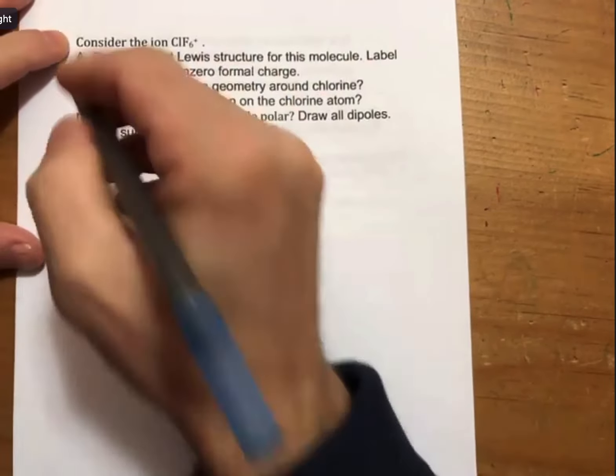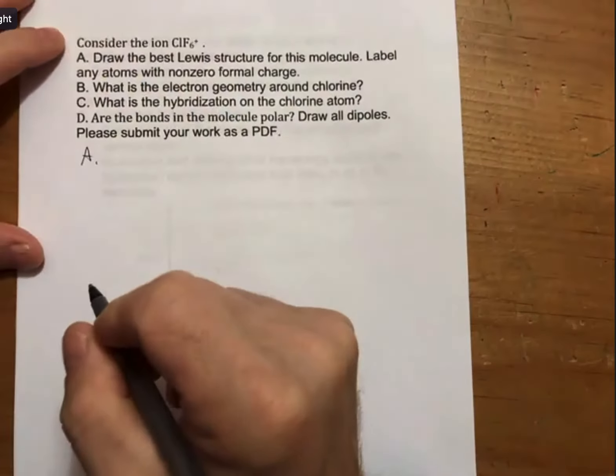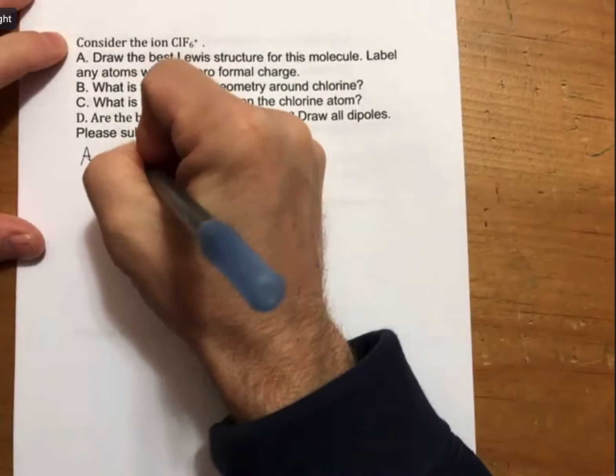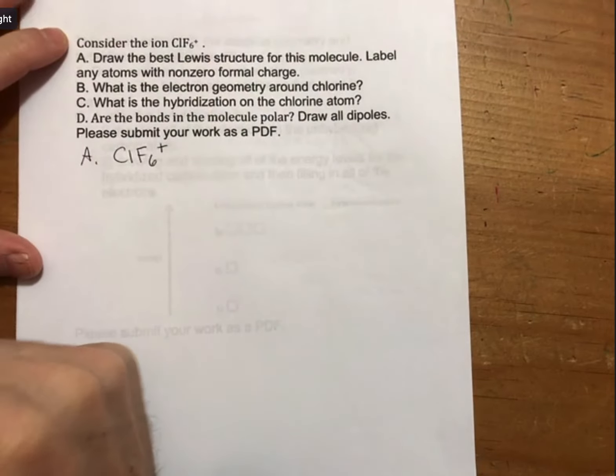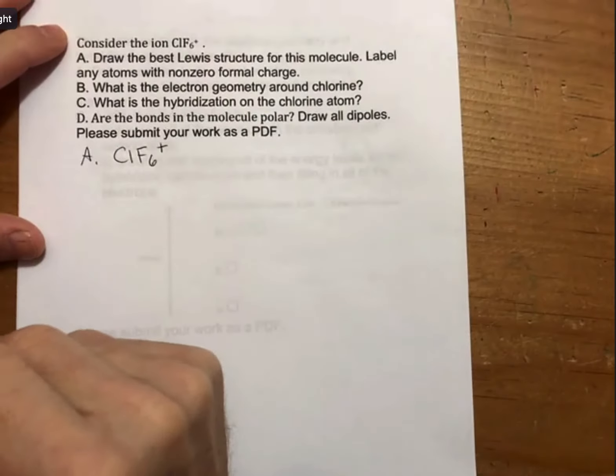But so it says draw the best Lewis structure. This one actually has an ionic charge, which means we're going to have to adjust the number of valence electrons.